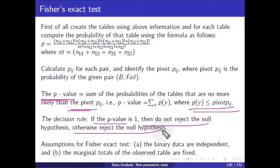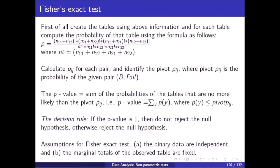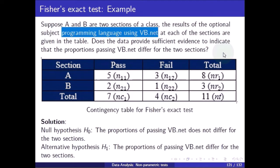Assumptions of Fisher's exact test: first, the binary data are independent; second, and importantly, the marginal totals of the observed table are fixed. Example: suppose A and B are two sections of a class. The results of the optional subject programming language using VB.NET for each section are given in a table.